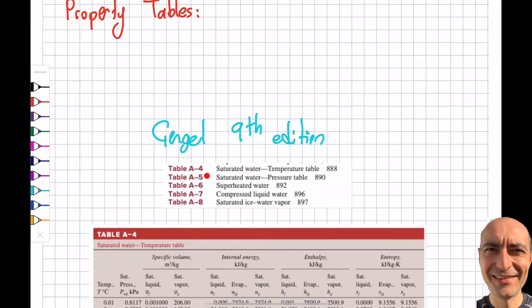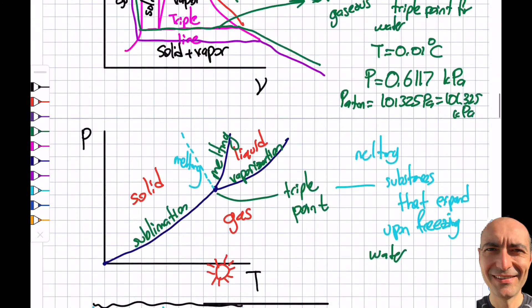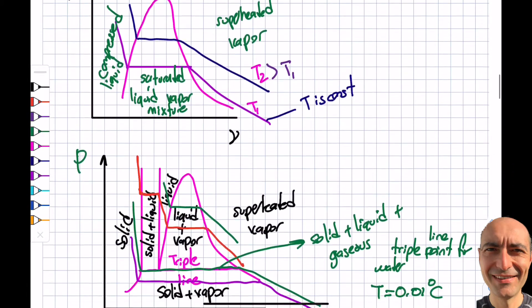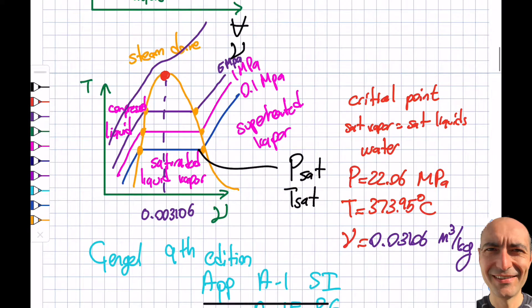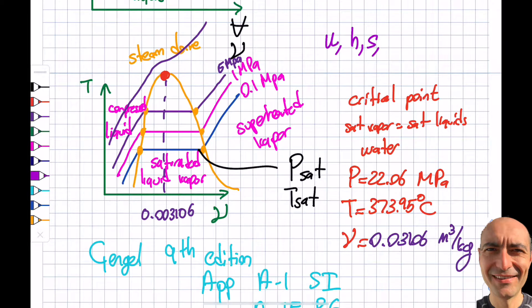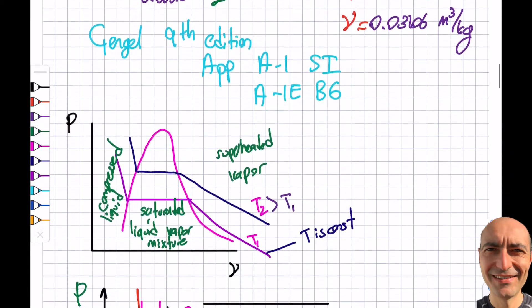Before going through and explaining them one by one, I want to explain why we need a table. If I go back to the previous segment, there are so many things to plot on a graph — internal energy, enthalpy, entropy — so it's much more convenient to write these in a table format.